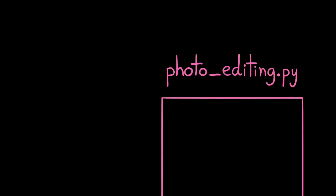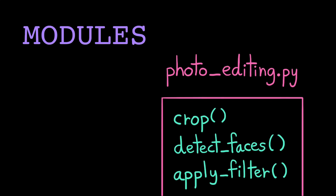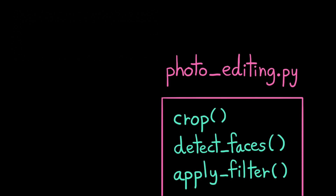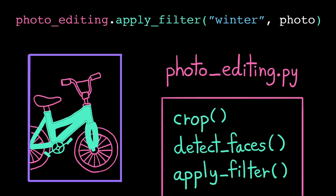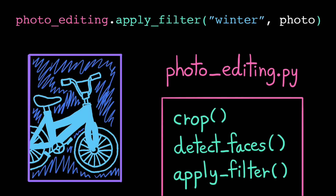In Python, programmers can package code that they've written for other people to use in what's called a module. You may also hear them referred to as libraries or packages. A module is essentially just a file of code, generally organized into a set of functions. Modules can quickly uplevel what we're able to accomplish in a program because we can use that functionality without having to understand the details of how that code works.